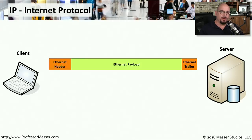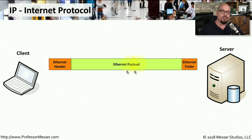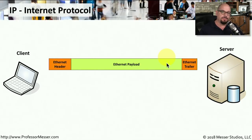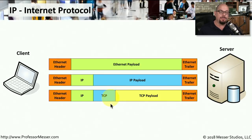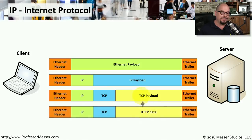If we visualize how this looks going across our network, we have a client on one side sending information to a server on the other side using an ethernet frame. Inside this ethernet frame is a header at the beginning and a trailer at the end, with an ethernet payload in the middle. Inside that payload is an IP header followed by an IP payload, which contains a TCP header and TCP payload — and ultimately, the TCP payload holds application data such as HTTP data being sent to a web server.